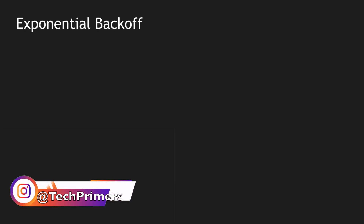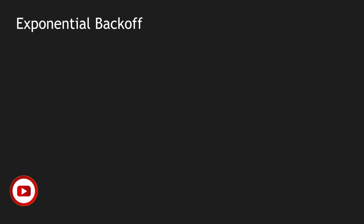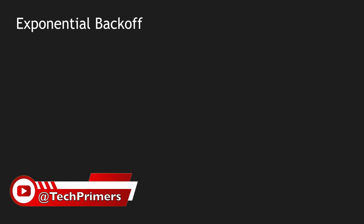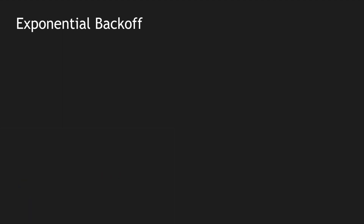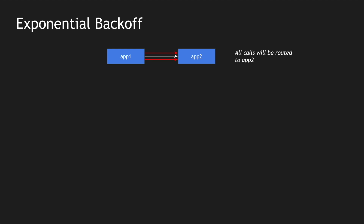So what is exponential back-off? At a high level, exponential back-off is an algorithm which uses feedback to decrease the rate at which we call some process. To explain it in simpler terms, let's take an example of Application 1 calling Application 2 multiple times. We realize that the second and third calls are failing — the first call was successful, but subsequent calls are failing. From the client perspective, irrespective of success, all calls are still routed to Application 2 without understanding any context of what happened previously.